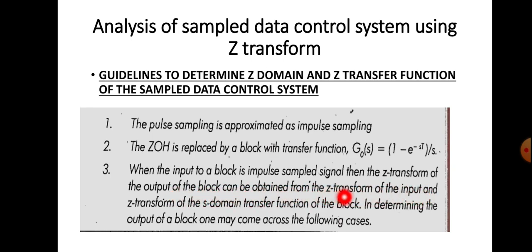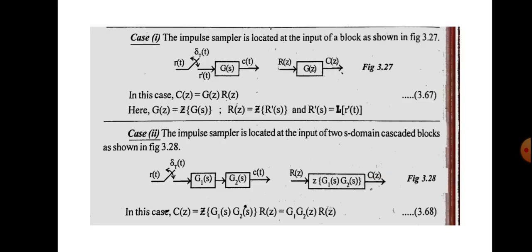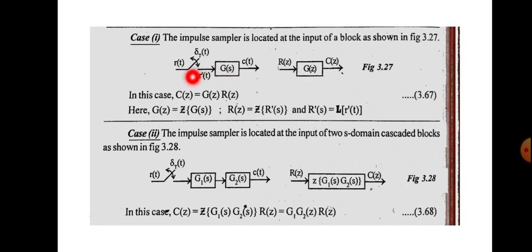In determining the output, there may be three cases. Case one: the impulse sampler is located at the input of a simple block. Here the block is G(s), the impulse sampler is at the input, the input is r(t), and the output is c(t). Let us draw the block diagram corresponding to this in terms of Z-transform.